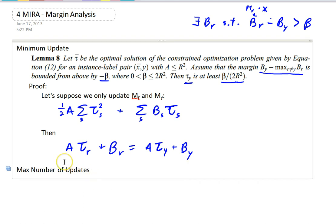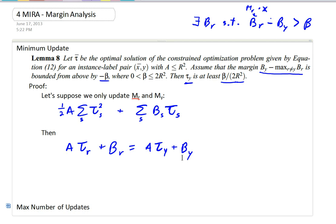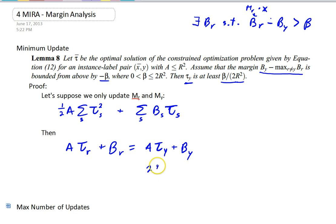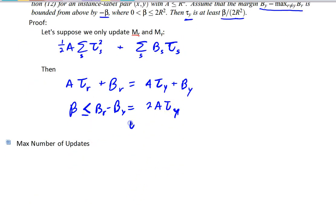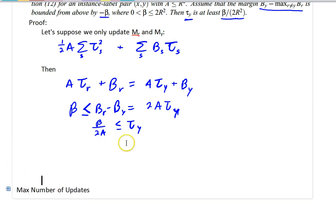So if one is positive, the other is negative. And so, what we get is that 2a tau y equals br minus by, and we know that this is greater than or equal to beta, okay? And so, then we're just going to get that tau y is greater than or equal to this beta over 2a.